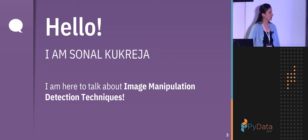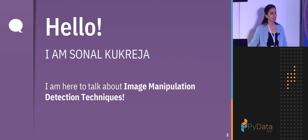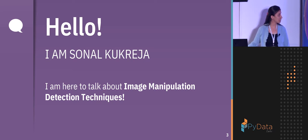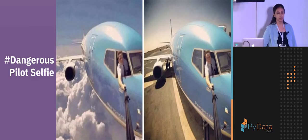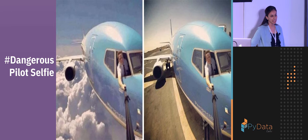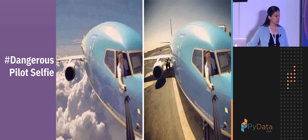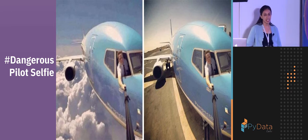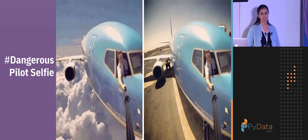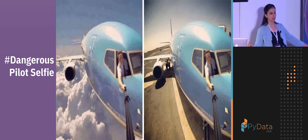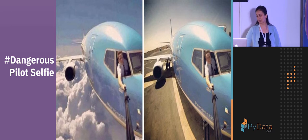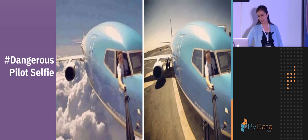I'm Sonal Sutpreja and I'm here to talk about image manipulation detection techniques. This is one more example of a manipulated picture where just the background has been changed. The news went viral that the pilot was clicking a photo in the air, but actually the photograph was taken on the ground. So it's quite easy to modify such images.